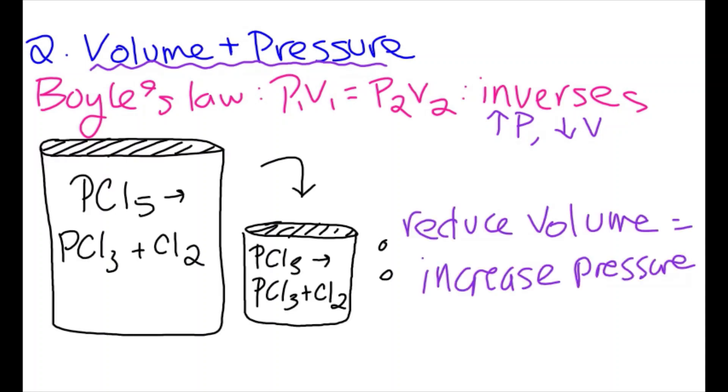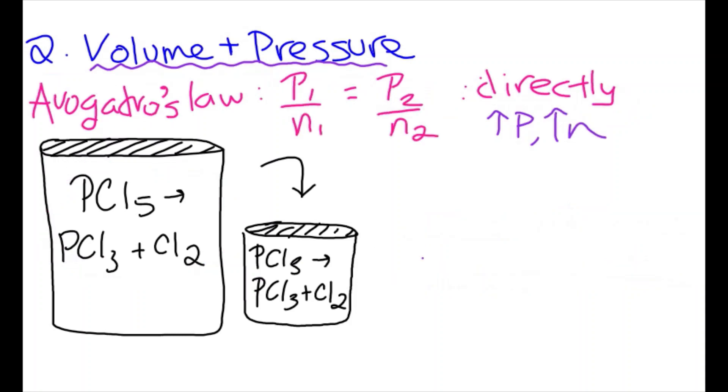For example, if our equilibrium reaction were to occur in a closed container, and the volume of the container were to be reduced, we know that the pressure within the container would increase. But, our chemical equation doesn't represent pressure, so how can we relate it to a shift in direction?